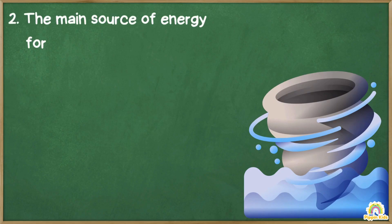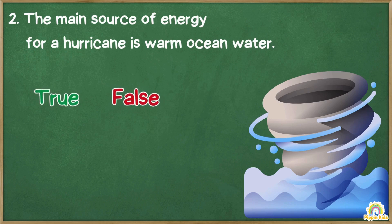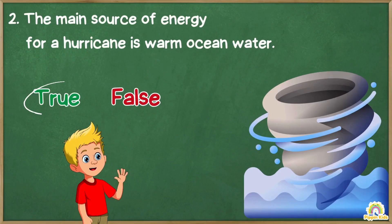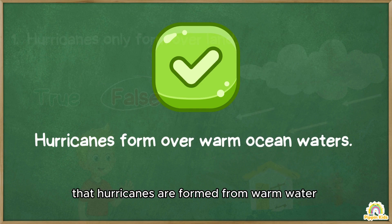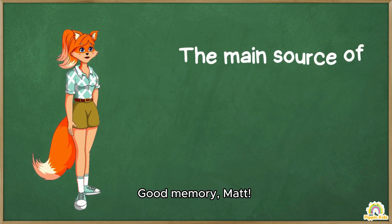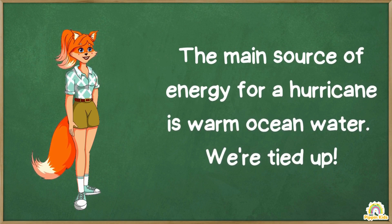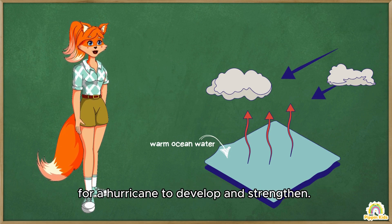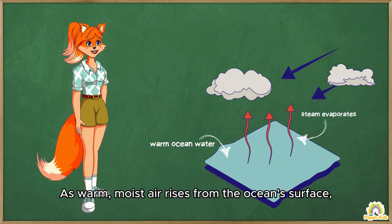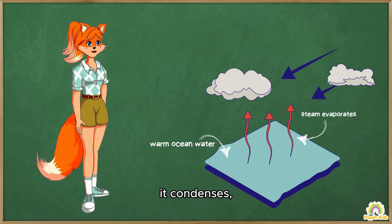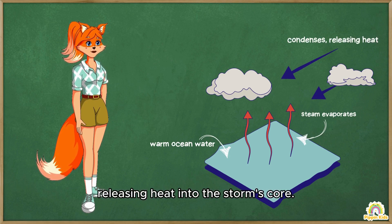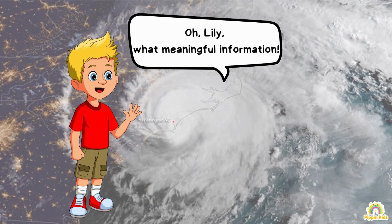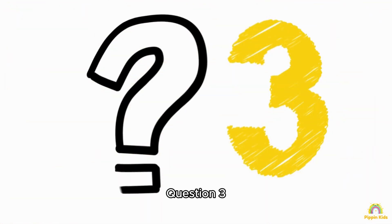Question two: the main source of energy for a hurricane is warm ocean water — true or false? You mentioned before that hurricanes are formed from warm waters — good memory! The main source of energy for a hurricane is indeed warm ocean water. Warm ocean water provides the heat and moisture needed for a hurricane to develop and strengthen. As warm, moist air rises from the ocean's surface, it condenses, releasing heat into the storm's core. This process fuels the hurricane's intense winds and heavy rainfall.